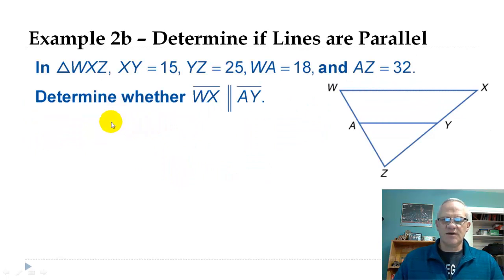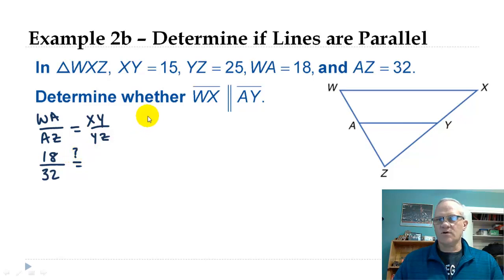All right, let's look at this one, just so you can see it a little bit different way. We're doing the same thing, just looking at the ratio there. So let's look at the ratio of WA over AZ and see if that equals XY over YZ. This time you notice we've got all the numbers here, so it'd be actually easier. We can just plug this in. WA is 18 over AZ 32. Does that equal XY 15 over YZ 25?